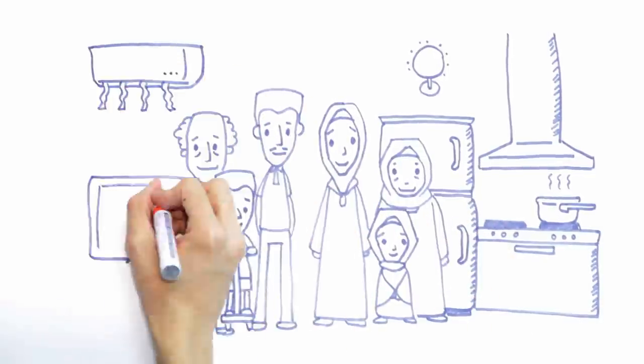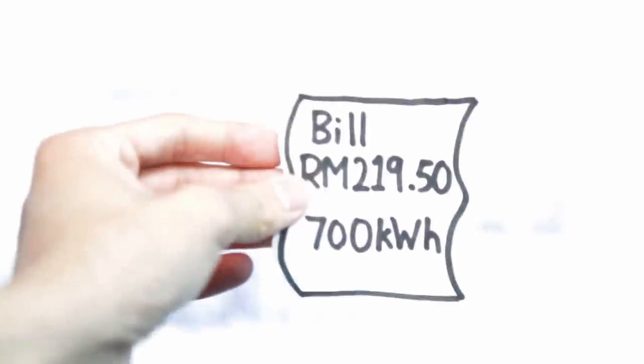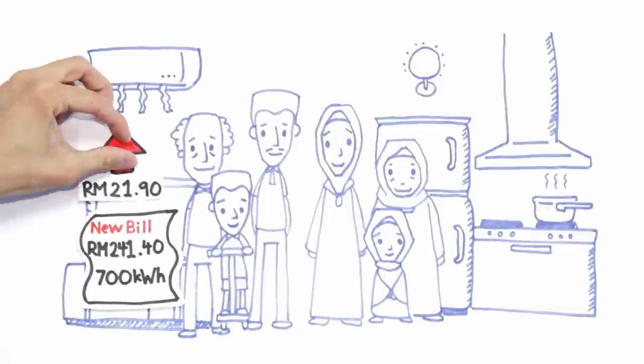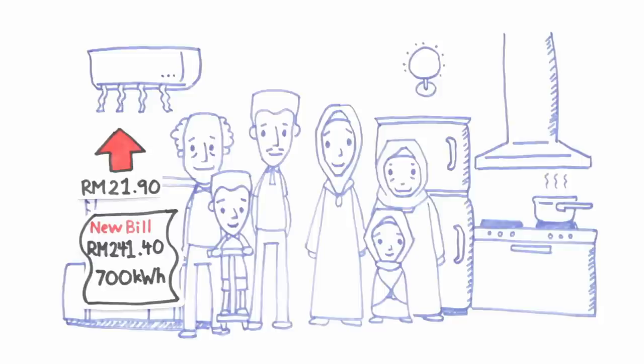Lastly, meet family C, whose existing average monthly bill is 219 ringgit and 50 cent. They use an average of 700 kilowatt hour per month. With the revised tariff, their average new monthly bill will be 241 ringgit and 40 cent.